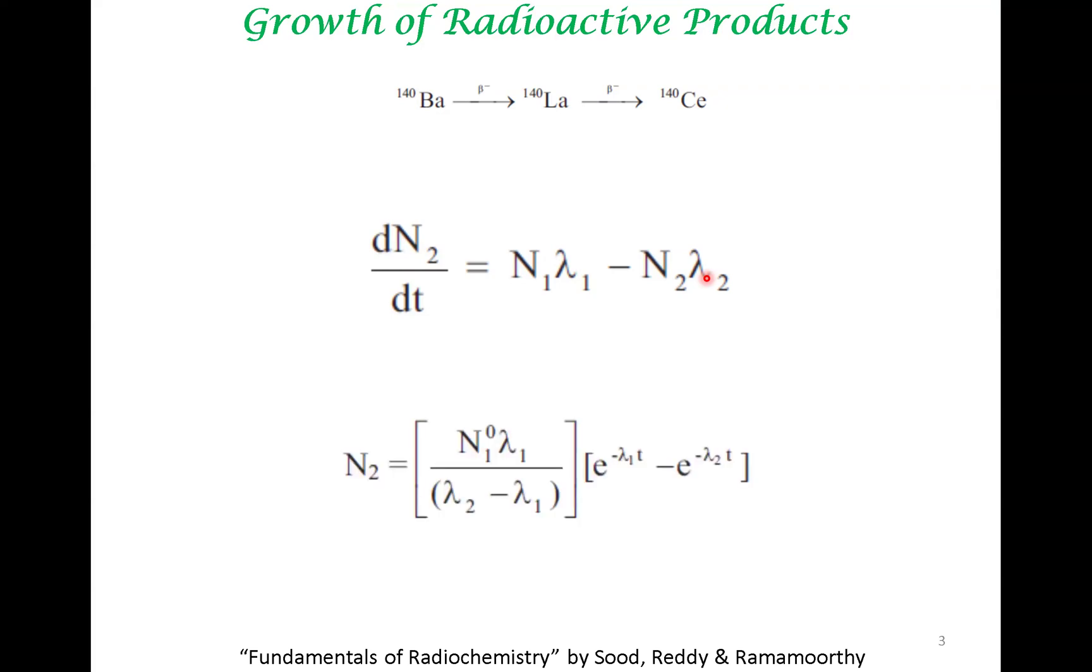So this can be solved with some little math. It's not difficult to solve this with some conditions. The typical conditions we assume is that at time t equal to 0, there is no lanthanum, there is no cerium. All that exists is barium. So how is that achieved? You can achieve such a situation via chemical separations.